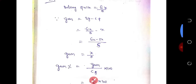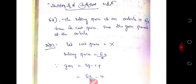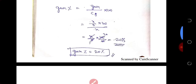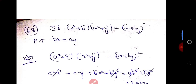So this is clear, this is an easy answer. The next question is: if (a² + b²)(x² + y²) is equal to (ax + by)² whole square, prove that ax = by.